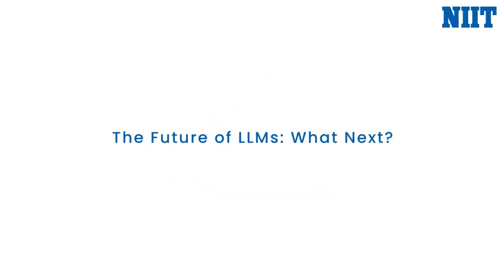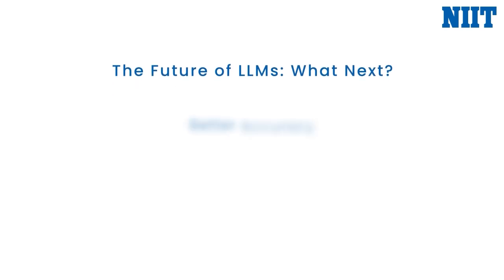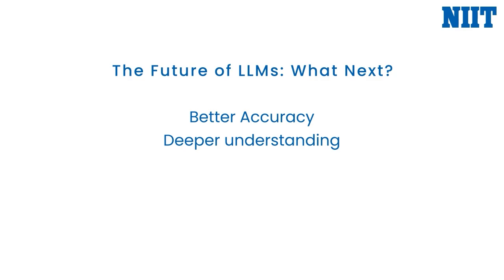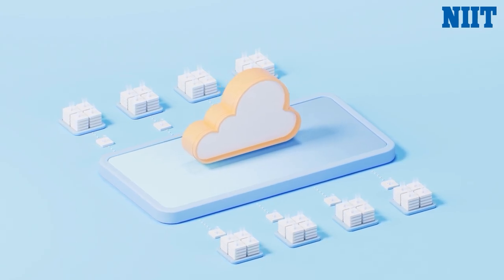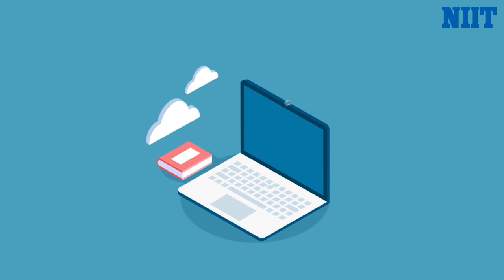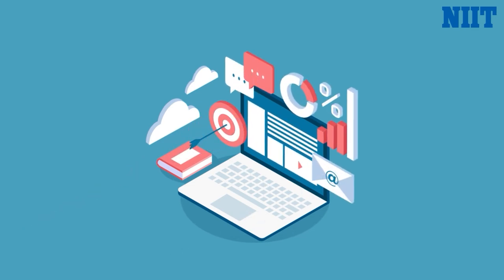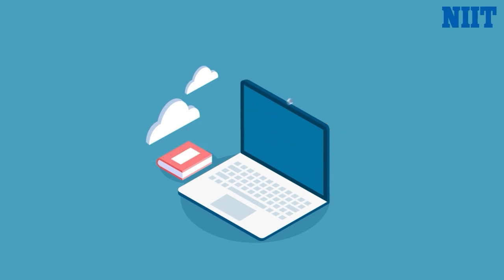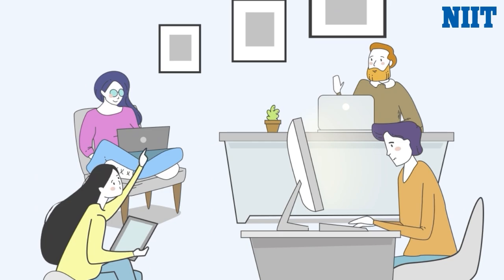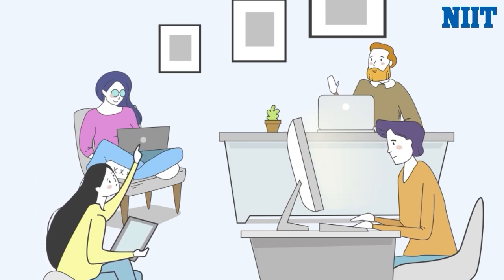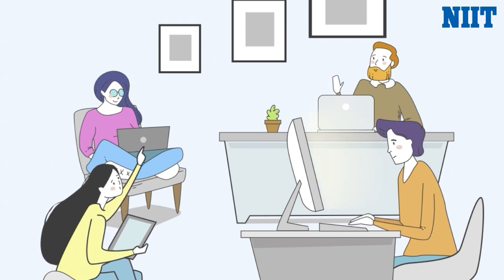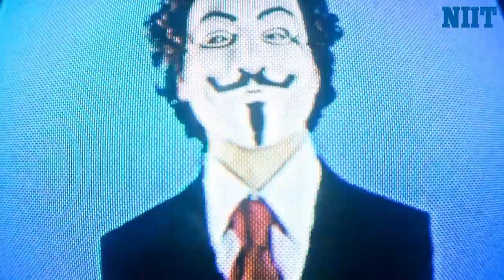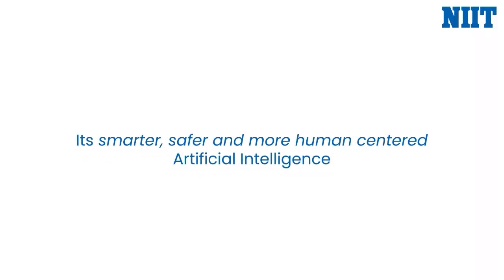Looking ahead, the future of LLMs is exciting. These models are getting smarter, faster, and way more intuitive — with better accuracy, deeper understanding of context, and conversations that feel almost human. AI won't just assist; it will feel like a natural extension of how we work and think. Soon, we won't even need the cloud — we'll be running powerful LLMs right on our phones and laptops, making things faster and more private. But with great power comes great responsibility. As these systems become part of our everyday lives, we need to build AI that is fair, transparent, and ethical — not just smarter AI, but smarter, safer, and more human-centered AI.